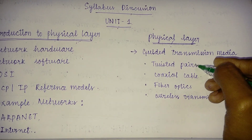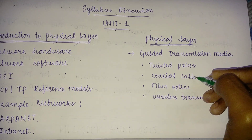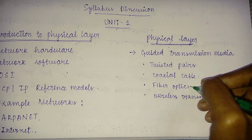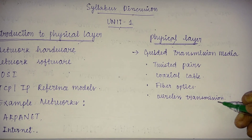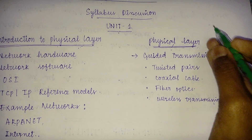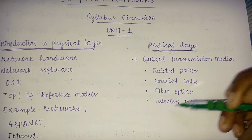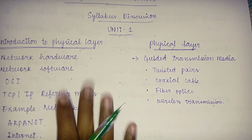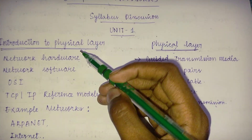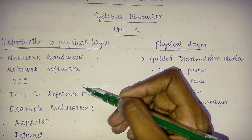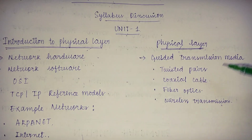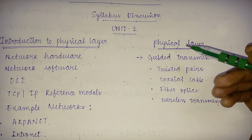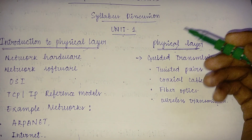Under the physical layer, we have guided transmission media, which includes twisted pairs, coaxial cable, and fiber optics, as well as wireless transmission. This is the complete syllabus for Unit One in JNTU. I hope this is clear.